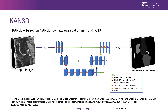Our proposed segmentation model is CAN3D with Collidoscope. The model was based on the 3D version of Context Aggregation Network, which uses dilated convolutions for multi-scale context aggregation. The main modification was the addition of the Collidoscope Transform before the convolution operations and the Inverse Collidoscope Transform after the convolution operations. The output from the final convolution layer would be the predicted segmentation maps for the downsampled images.